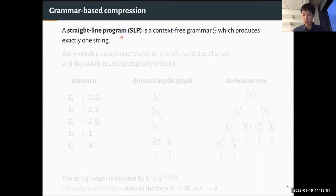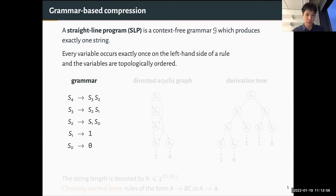Such a grammar has to satisfy two properties. Here's an example of such a grammar with its rules and non-terminals S0 to S4, which I will often call variables. Every variable should occur exactly once on the left-hand side of a rule, and you want to avoid cyclic derivations, so you need to define some topological order which is respected by the rules.